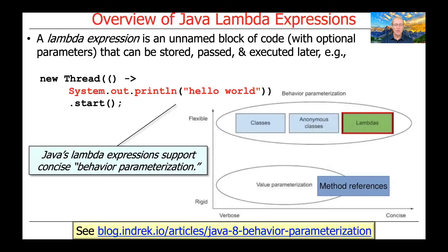Java Lambda expressions support very concise behavior parameterization. If you take a look at the diagram on this slide, you can see that there are various forms of parameterization of behaviors. Some of them are very concise, such as Lambdas. Others are more flexible — things like classes or anonymous classes that are kind of in between. And then some are a bit more rigid and also very concise, such as method references, which we'll be talking about in an upcoming lesson.